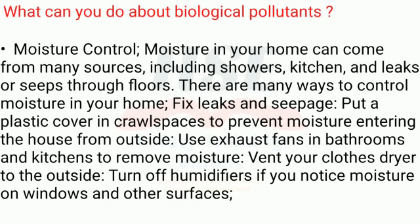Moisture control: Moisture in your home can come from many sources including showers, the kitchen, and leaks or seeps through floors. There are many ways to control moisture in your home: fix leaks and seepage, put a plastic cover in crawl spaces to prevent moisture entering the house from outside, and use exhaust fans in bathrooms and kitchens to remove moisture.